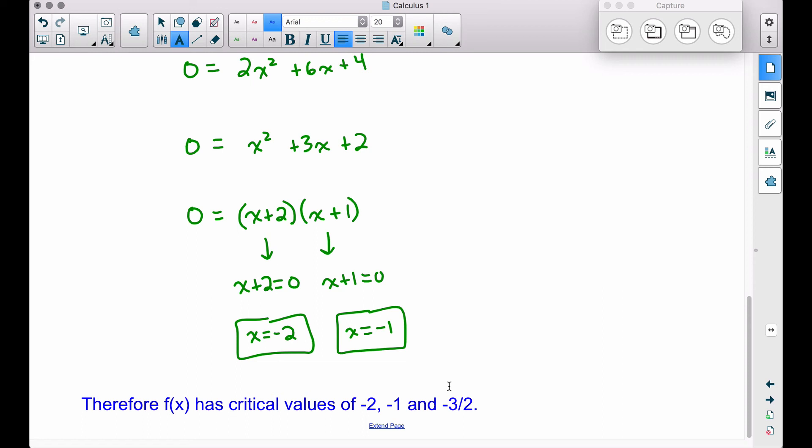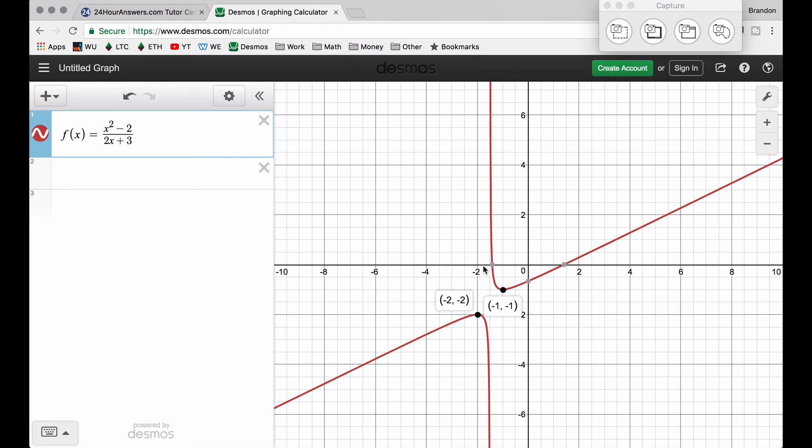Let's have a look over at Desmos to see these critical values in action. So here's f of x over in Desmos and remember two of our critical values. Ironically we're getting, don't worry about the y values here. What we're talking about are the x values. When x is negative one, we do have a critical value because the derivative is equal to zero there. We do have a horizontal tangent line right there when x is equal to negative one.